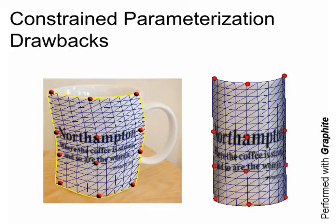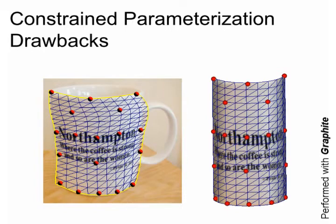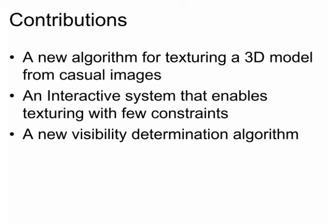Compensating for these effects is challenging, even with a large number of constraints. Our contributions are: one, a new algorithm for texturing a 3D model from casual images. Two, an interactive system that enables texturing with few constraints. Three, a new visibility determination algorithm.